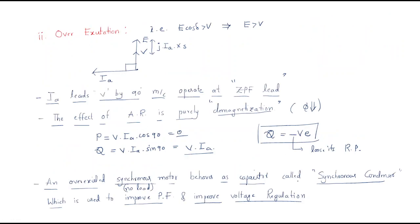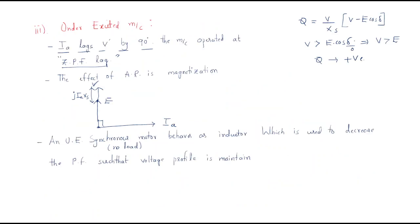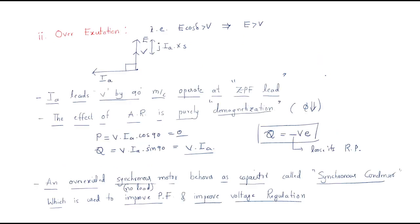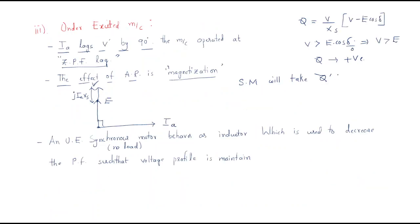The effect of armature reaction is magnetization. The synchronous motor takes — or absorbs — reactive power Q. In over-excitation the motor supplies reactive power, but in under-excitation it acts as a reactive power receiver.